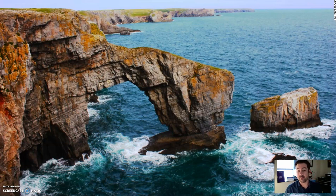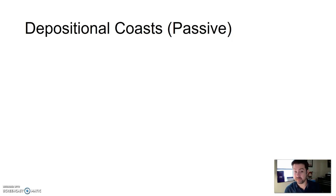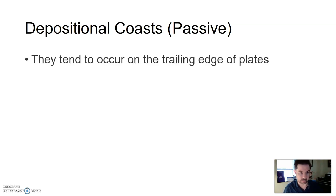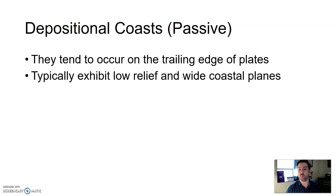The opposite of that would be depositional coasts. Typically more so associated with passive margins away from plate boundaries, but not always. They tend to occur on the trailing edges of plates — tend to occur, not always. So these are going to be away from plate boundaries.